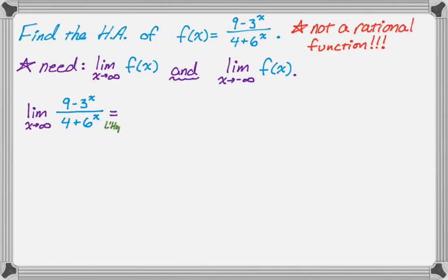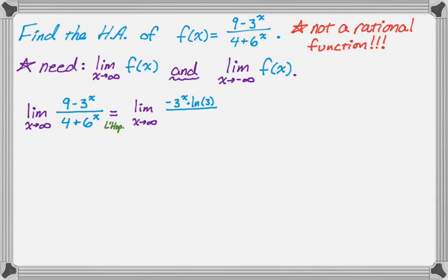I'm going to use L'Hôpital's rule — and I'll also show a different way, so if you haven't covered L'Hôpital's yet, don't worry. Applying L'Hôpital's, we take the limit as x approaches infinity of the derivative of the top over the derivative of the bottom. The derivative of 9 is 0, so the top becomes -3^x · ln(3). The derivative of 4 is 0, so the bottom becomes 6^x · ln(6).